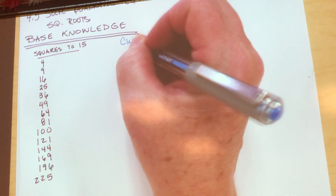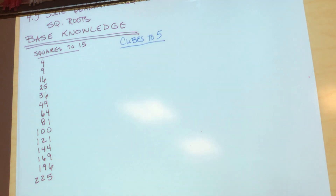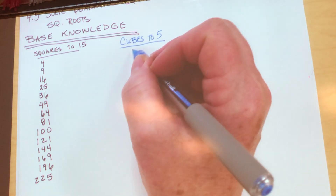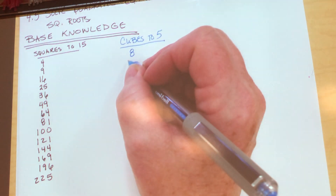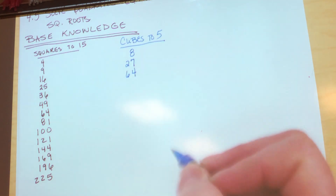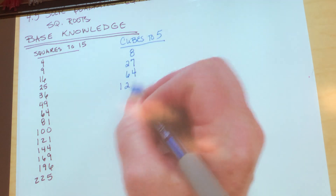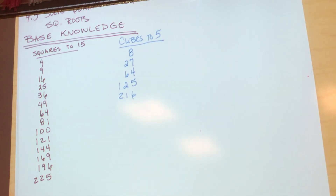You also need to know your cubes up to 5. 2 cubed is 8 — that's 2 times 2 times 2. 3 cubed is 27. 4 cubed is 64. 5 cubed is 125. And I'll tell you this one too: 6 cubed is 216. In the next couple of weeks you'll know that one because it's going to come up a lot.